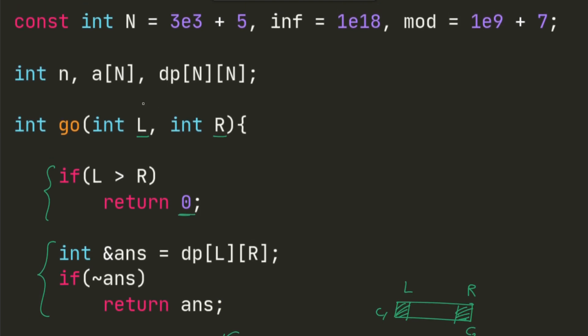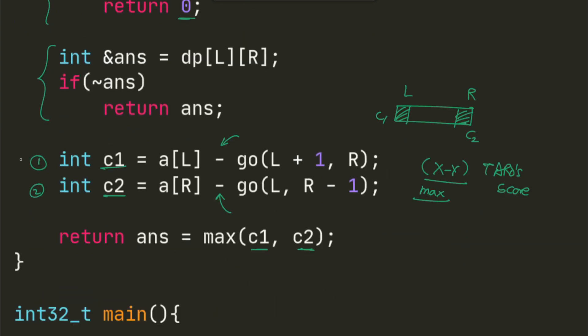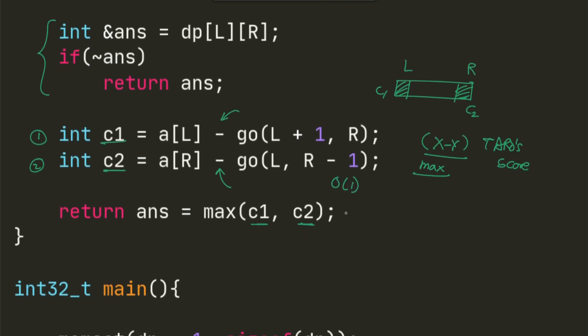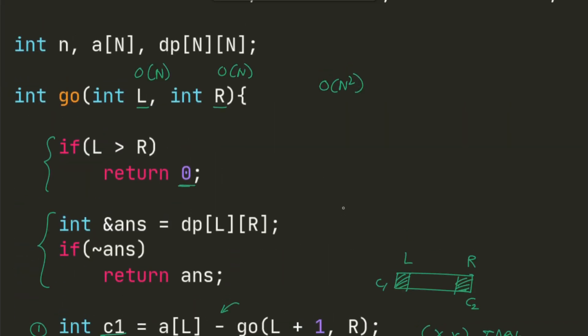The time complexity - the number of states for this would be order n. Overall order n squared for the states, and transitions are constant time. Time complexity is order n squared, and memory-wise also it is n squared for the DP table initialized here.